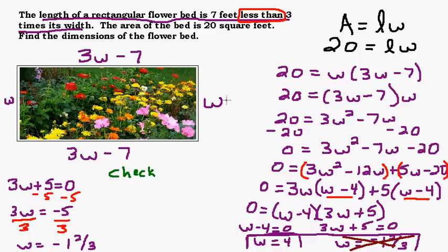So we got w equals 4, so that would mean the width would be 4 feet. And actually we were supposed to find both the dimensions, so we would want to find the length as well. And we know the length is 3 times w, which we now know is 4, take away 7.